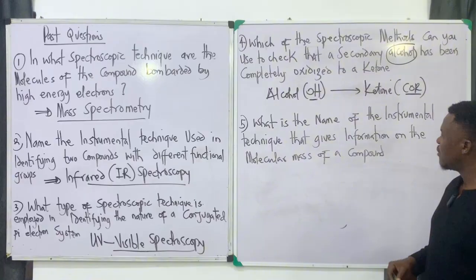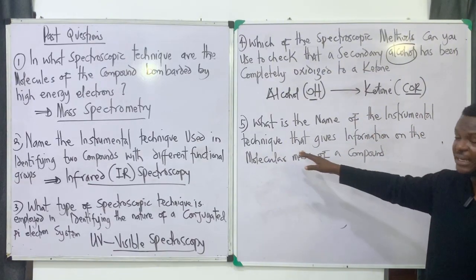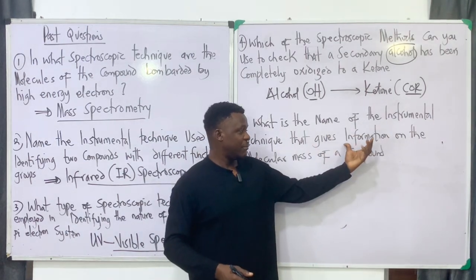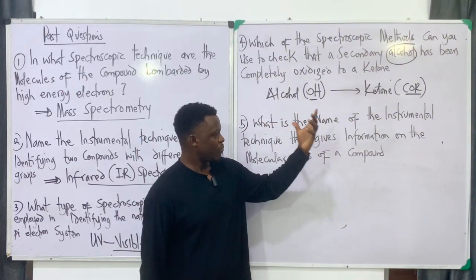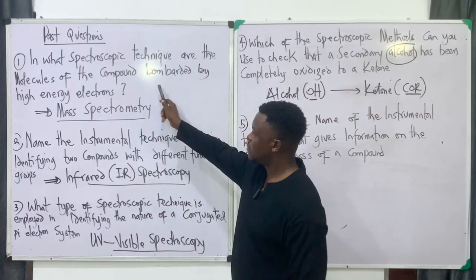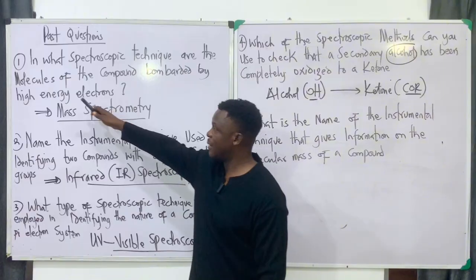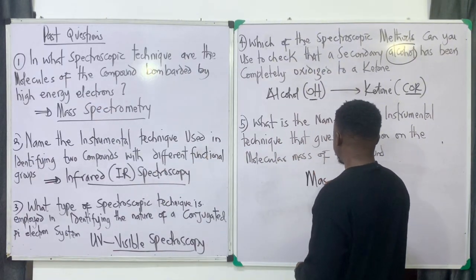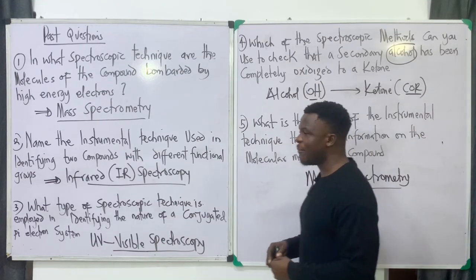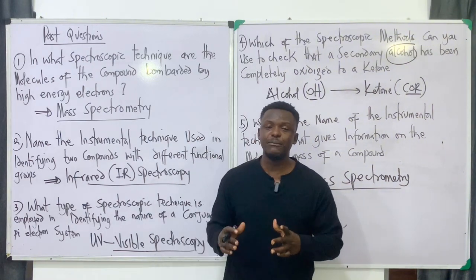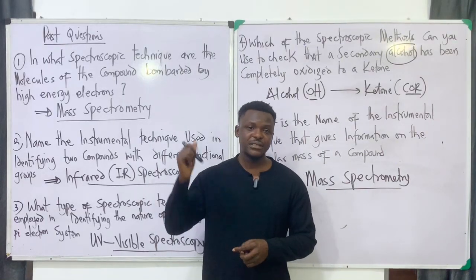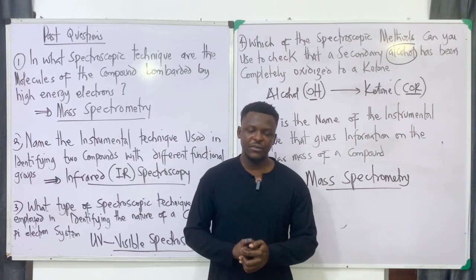Practice question five: What instrumental technique gives information on the molecular mass of a compound? Mass spectrometry gives information about the relative molecular mass of a compound, and in mass spectrometry, compounds are bombarded with high-energy electrons. Please like, subscribe, and drop a comment if you have any questions.